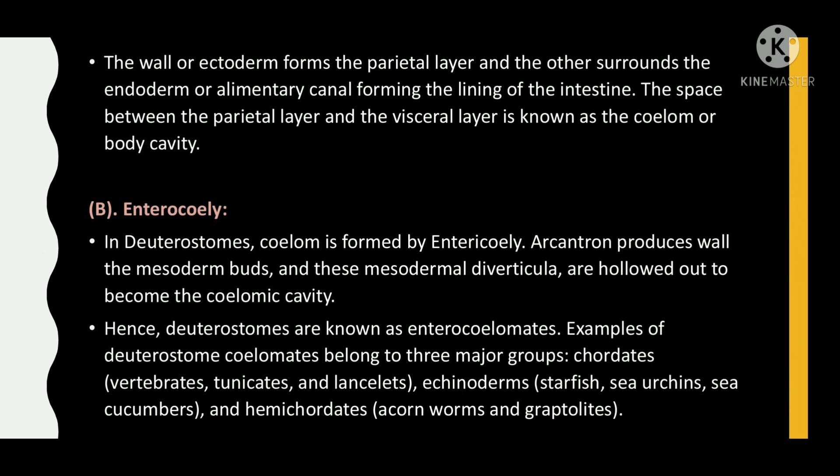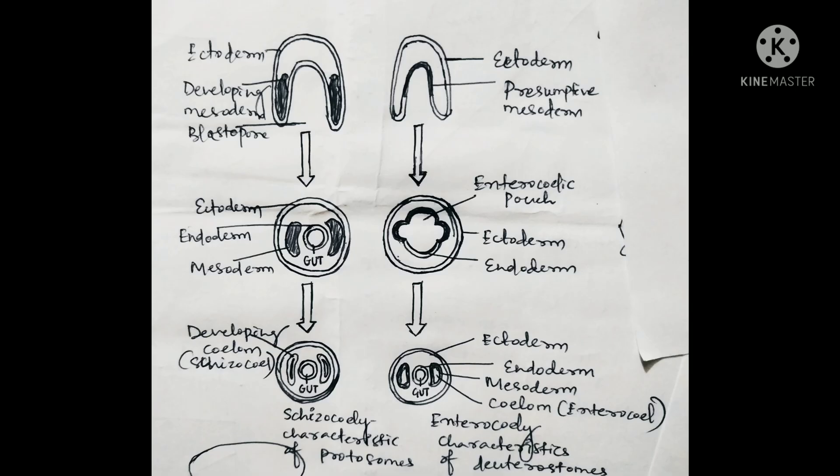Coelomates belong to three major groups: chordates, vertebrates, tunicates, and lancelets. Under echinoderms: starfish, sea urchins, and sea cucumbers. Under hemichordates: acorn worms and graptolites. This diagram presents the schizocoely characteristics of protostomes and enterocoely characteristics of deuterostomes.